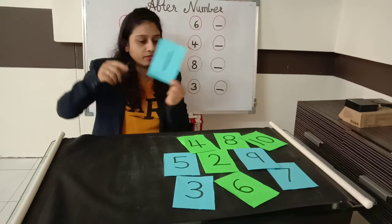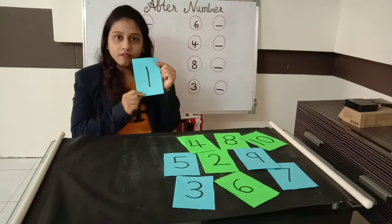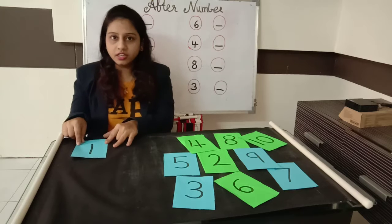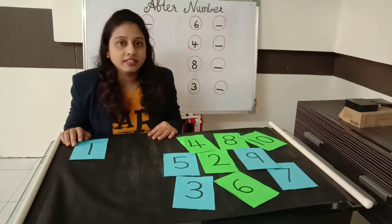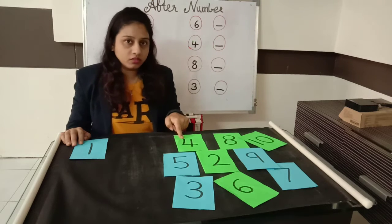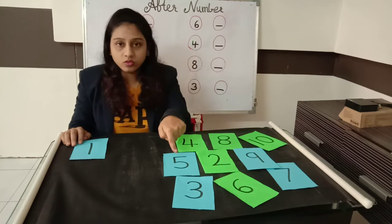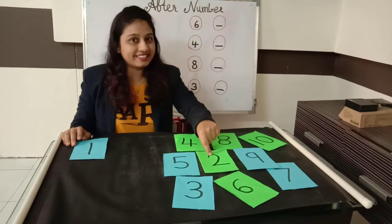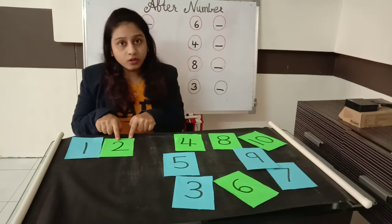1 number. So here is number 1. We will arrange it here. Now, what comes after 1? 2. So, where is number 2? This one? No. This one? No. This one? No. This one? Yes. This is number 2. So we will place it here — 1, then 2.